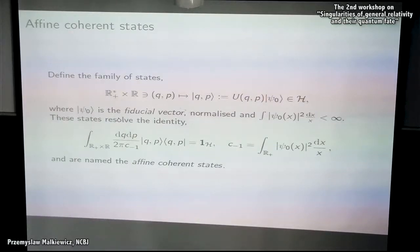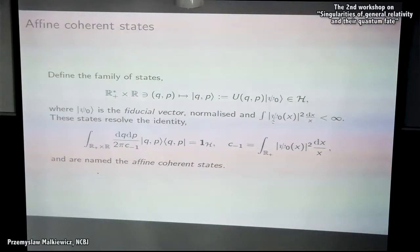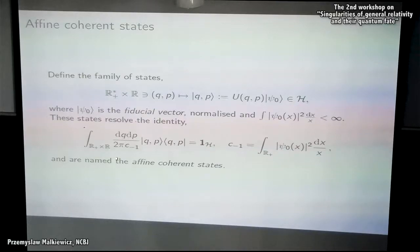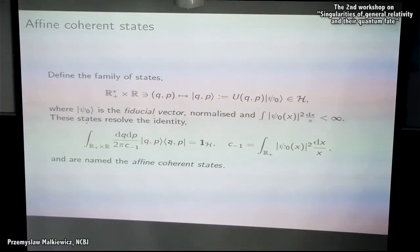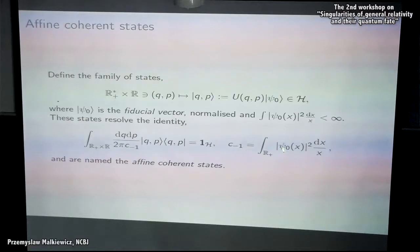Affine coherent states are a map from phase space to a Hilbert space, defined through elements of the unitary representation of the affine group acting on some fixed normalized fiducial vector. Admissible vectors must also satisfy an admissibility condition in order for the group to be square-integrable — that is, in order for these states to resolve the identity. This constant must of course be finite and equals a specific integral.